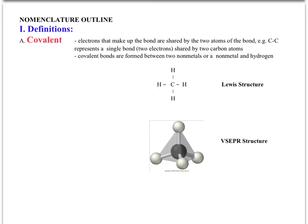In methane, there are four covalent bonds. The top structure shows the Lewis representation, which uses lines to indicate bonding. The number of bonds is correct, but it doesn't say anything about geometry or bond angles. So we have another representation called VSEPR, which stands for valence shell electron pair repulsion theory. This is the structure that results from it — we'll talk about that in detail later.